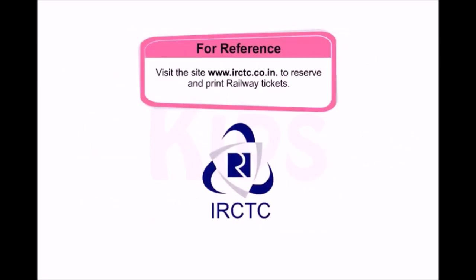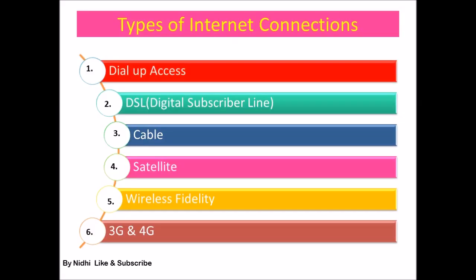If you want to reserve and print railway tickets, you should visit the IRCTC website. Now we are going to learn about types of internet connections. There are six types: first is dial-up access, second is DSL — Digital Subscriber Line.